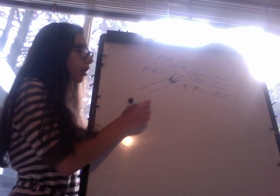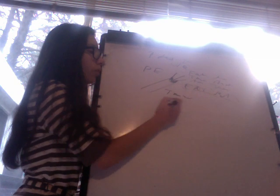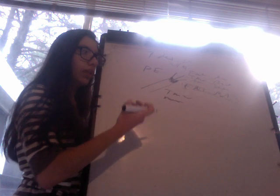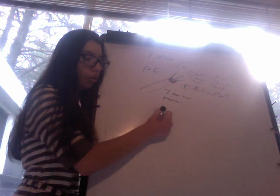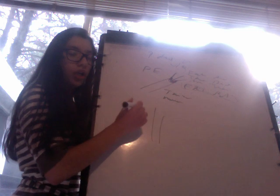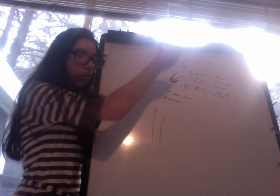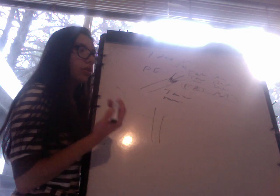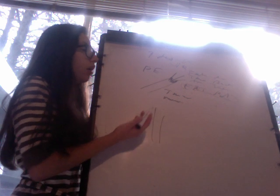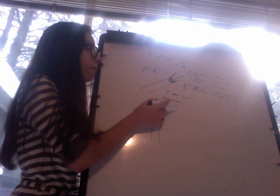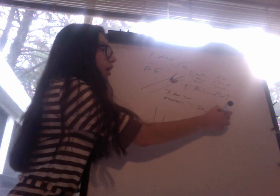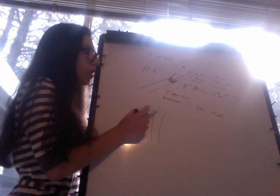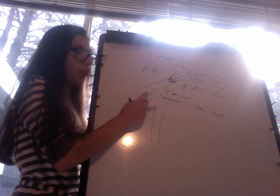If it is fat embolism, we usually have a triad of neurological symptoms — because the bone marrow that goes out of a long bone in a fracture can travel to the pulmonary artery or to the arteries of the brain, causing neurological symptoms — plus a skin rash, which is petechiae in the thorax, and pulmonary embolism itself.